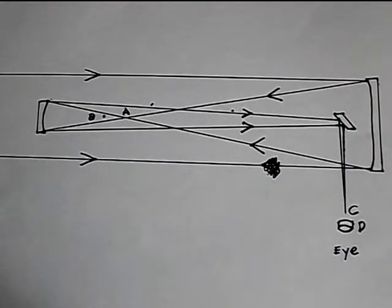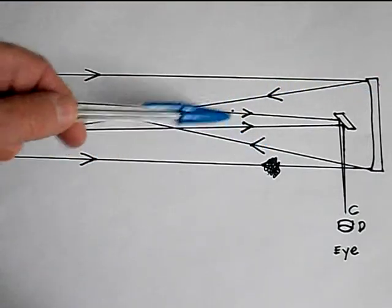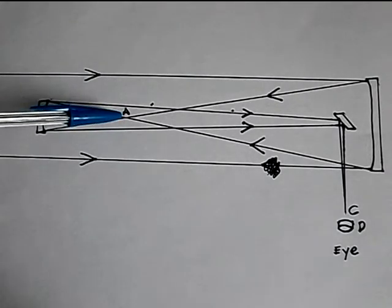I'll show you the optical layout. These long lines show a bundle of parallel light rays coming in from a star. The light waves come down into the telescope tube, this is the 13 inch primary mirror right here, and the light rays bounce off of that and they intersect right at point A right there.